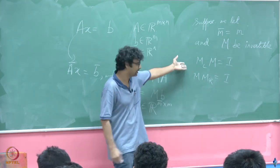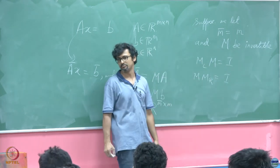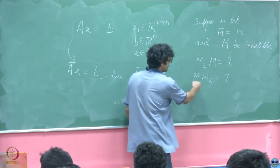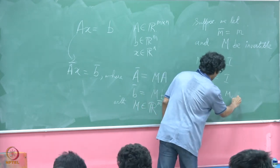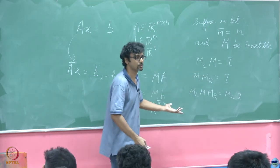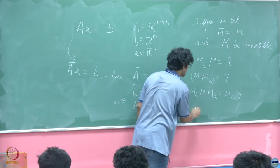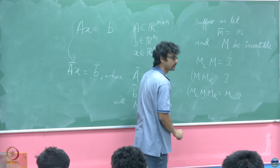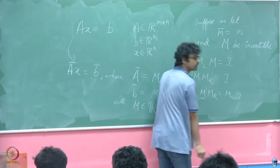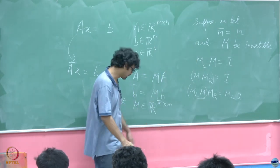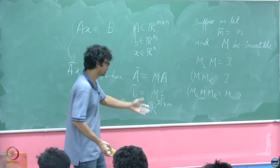So suppose you have M_L, the left inverse of M and M_R is the right inverse. You have M_L M M_R is equal to M_L I and now we use the property of associativity. This from the first equation is identity, so M_L is equal to M_R. It is pretty standard, this sort of proof.